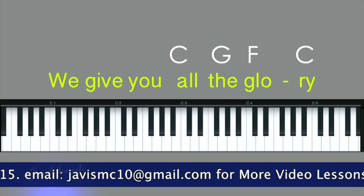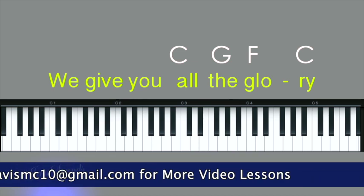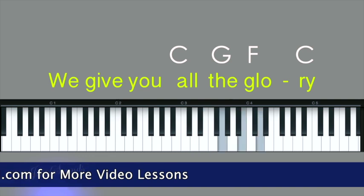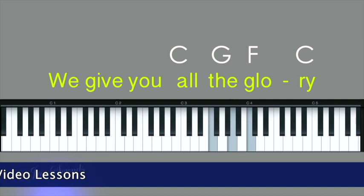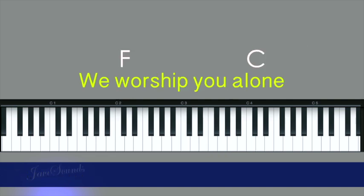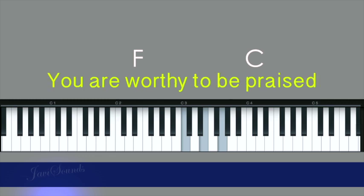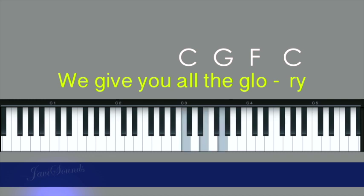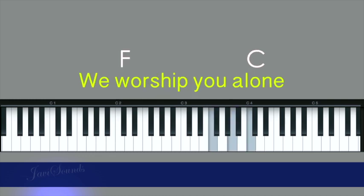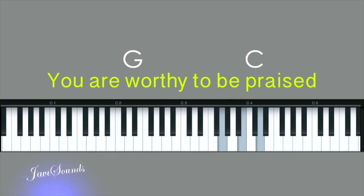Let me go to the next part of the song. Starting with C major — 'we give you all' — then go to G — then to F — 'glory' — back to C — then back to F — 'we worship you' — back to C — 'alone' — then G major — 'you are worthy to be' — back to C major — 'praised.' So: 'We give you all the glory, we worship you alone, you are worthy to be praised.'